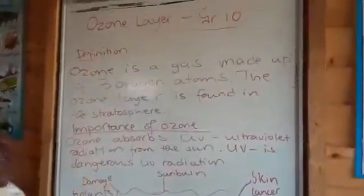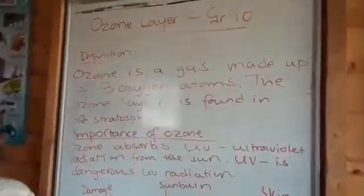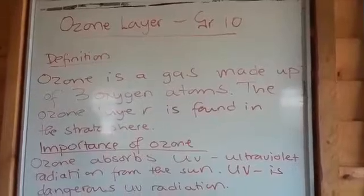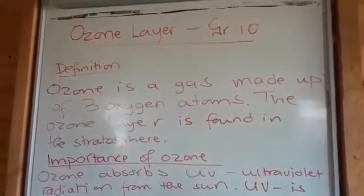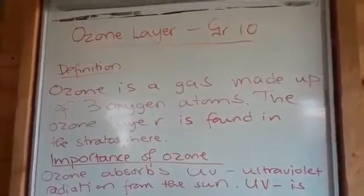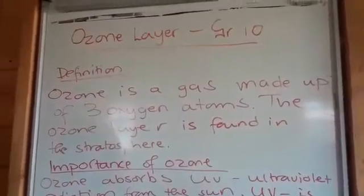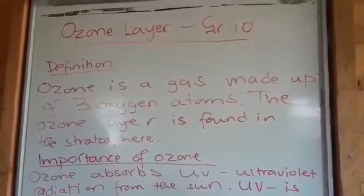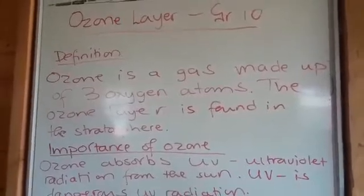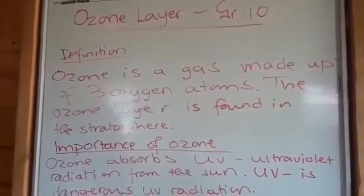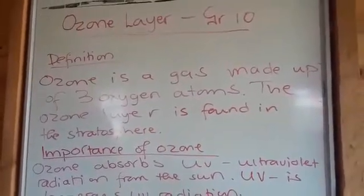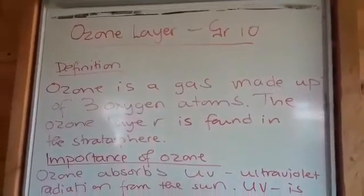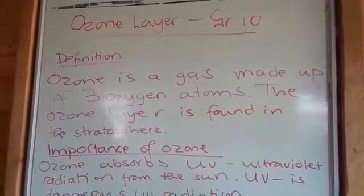Now, what is ozone? I've prepared some definitions for you here. Ozone is a gas that is made up of three oxygen atoms and it is found in the stratosphere. Remember, the stratosphere is the second layer that we find in the atmosphere.